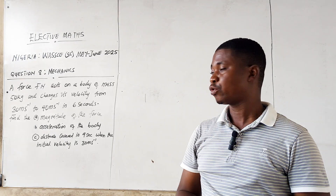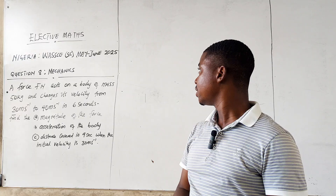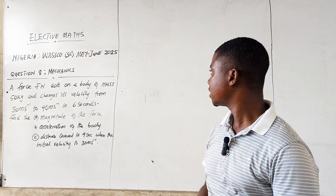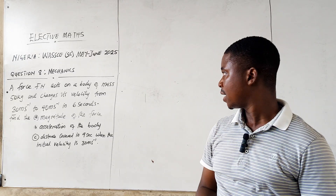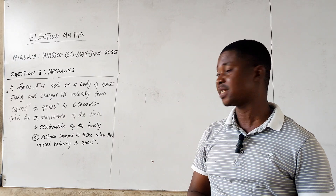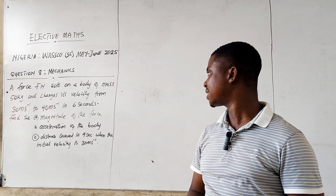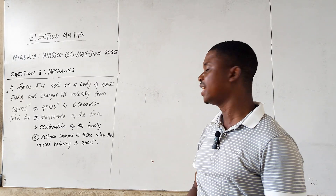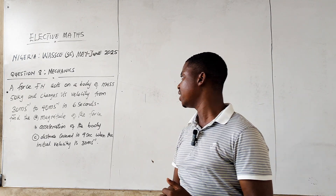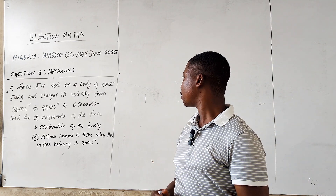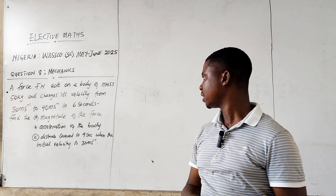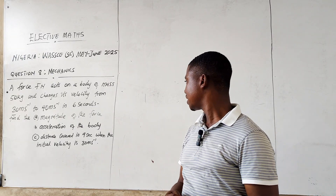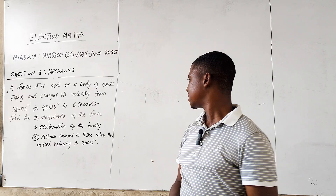Hello, welcome back to today's lesson. Today we are going to look at Elective Maths, Nigeria WAEC 2025, question number eight. The question is on mechanics and it reads: a force F newtons acts on a body of mass 50 kilograms and changes its velocity from 30 meters per second to 40 meters per second in six seconds. Find: (a) the magnitude of the force, (b) the acceleration of the body, (c) the distance covered in nine seconds when the initial velocity is 30 meters per second.